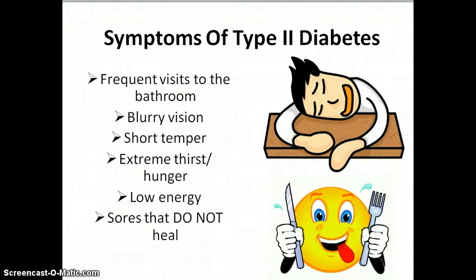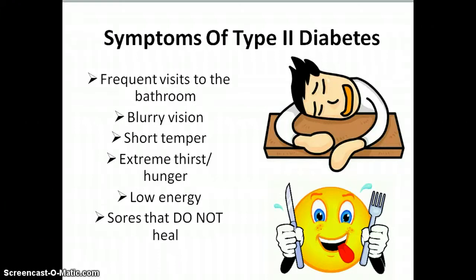What are some symptoms of type 2 diabetes? That can be frequent visits to the bathroom, blurry vision, short temper, extreme thirst or hunger, low energy, or sores that don't seem to heal. In some cases, there are actually no symptoms at all. So just because you don't have symptoms doesn't mean you do not have diabetes.